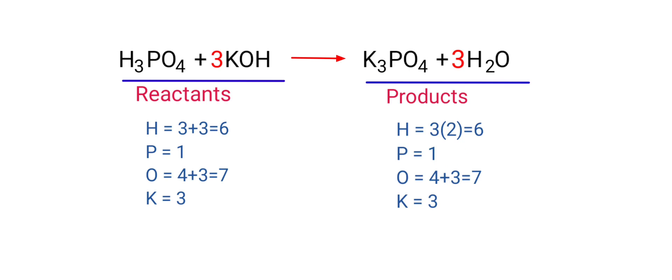The equation is now balanced. There are 6 hydrogen atoms, 1 phosphorus atom, 7 oxygen atoms, and 3 potassium atoms on both sides.